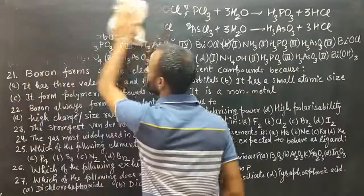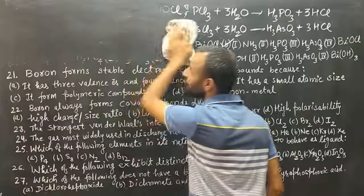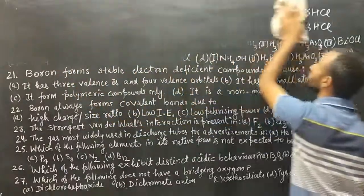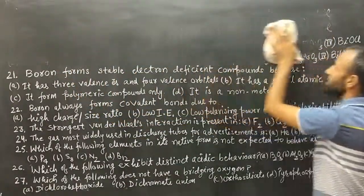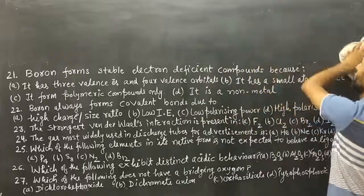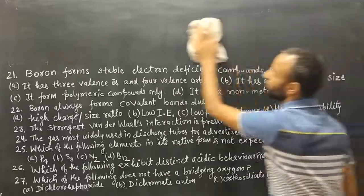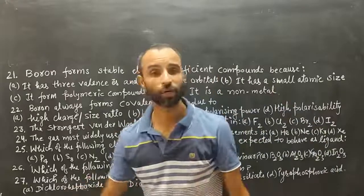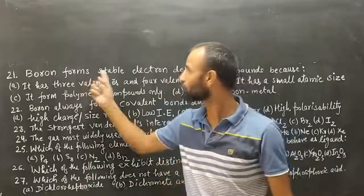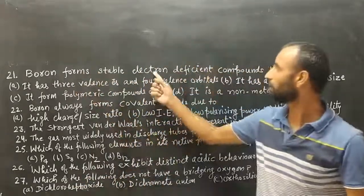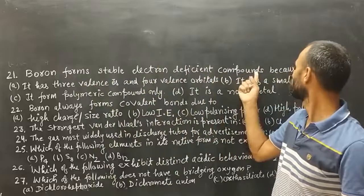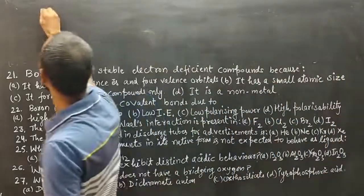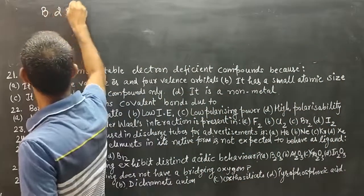This is very important because these are actually five different sub-questions covered in one question. Now, question number 21: Boron forms stable electron-deficient compounds. Why? Boron has the electronic configuration 2s2, 2p1.